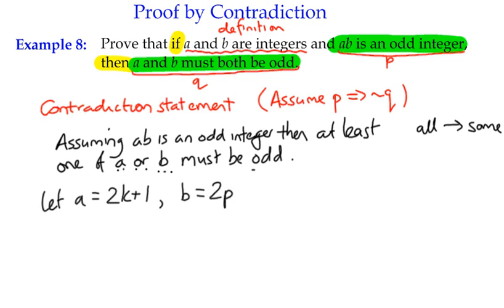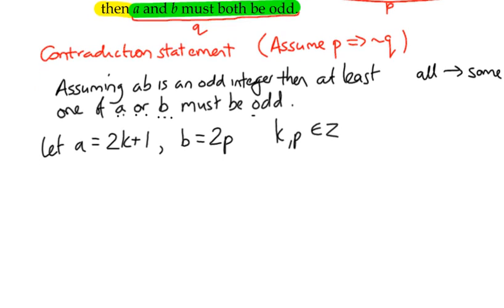Now we're going to use K and P, we've already defined the ideas of odd and even numbers. A and B are independent of each other, so we have to use different variables. And we'll say that K and P are both integers in their own right. So A is an odd number, B is an even number.